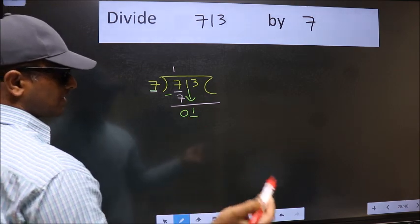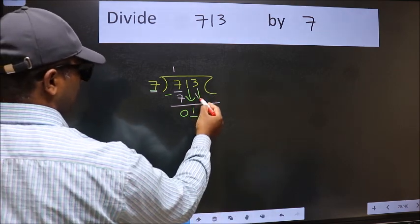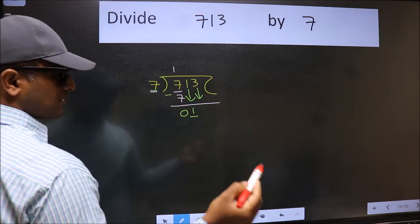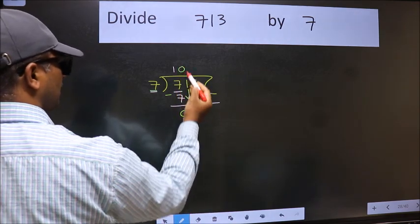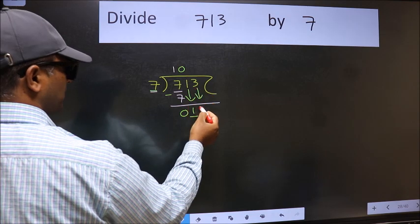So we should bring down the second number. And the rule to bring down the second number is we should put 0 here. Then only we can bring this number down.